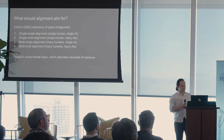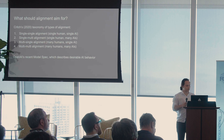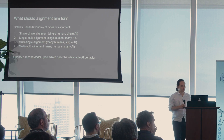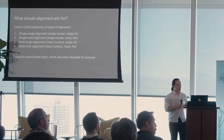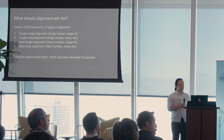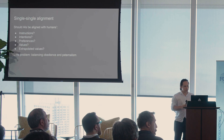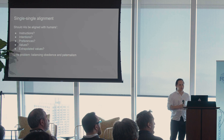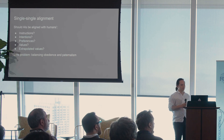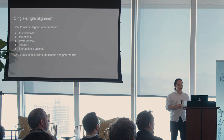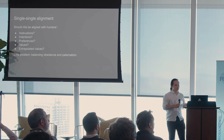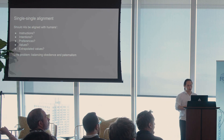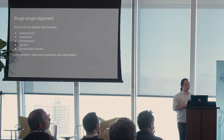I'll go through each of these four types of alignment and talk about how I'm thinking about them and what it would look like to achieve each. With single-single alignment, this is the longest-standing area people have thought about. A long-standing question is whether an AI should be aligned with which aspects of a human's goals or values.